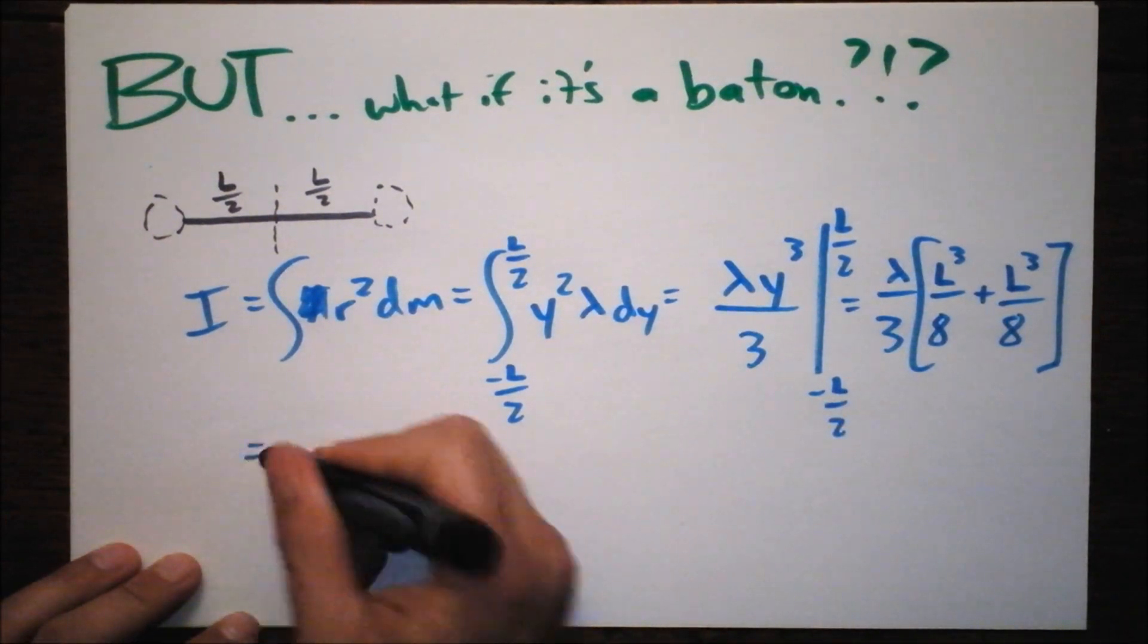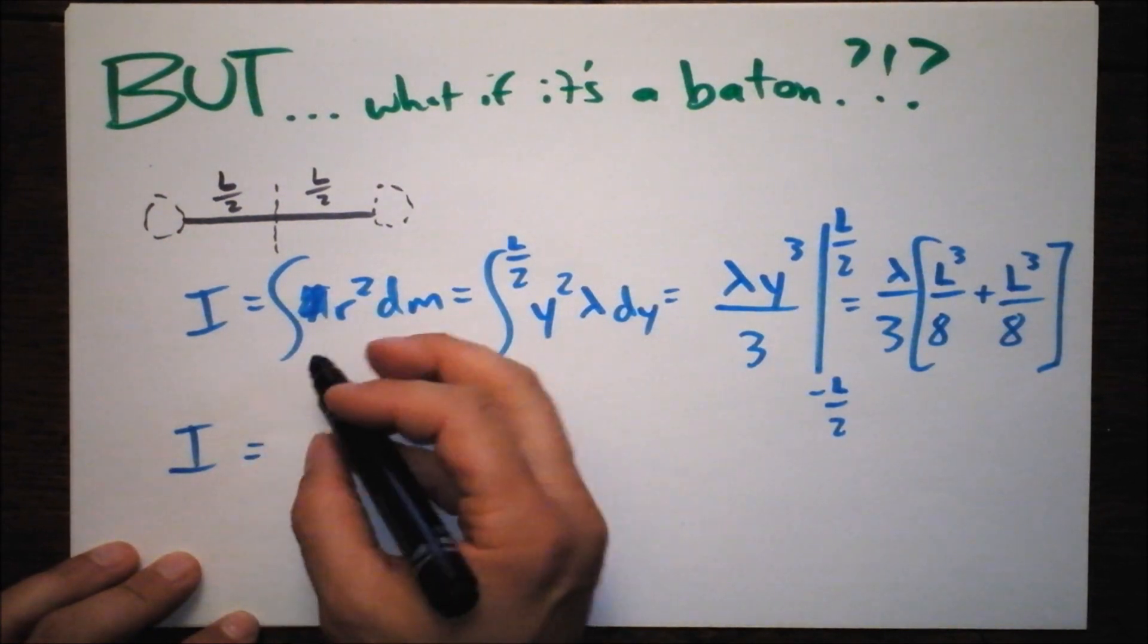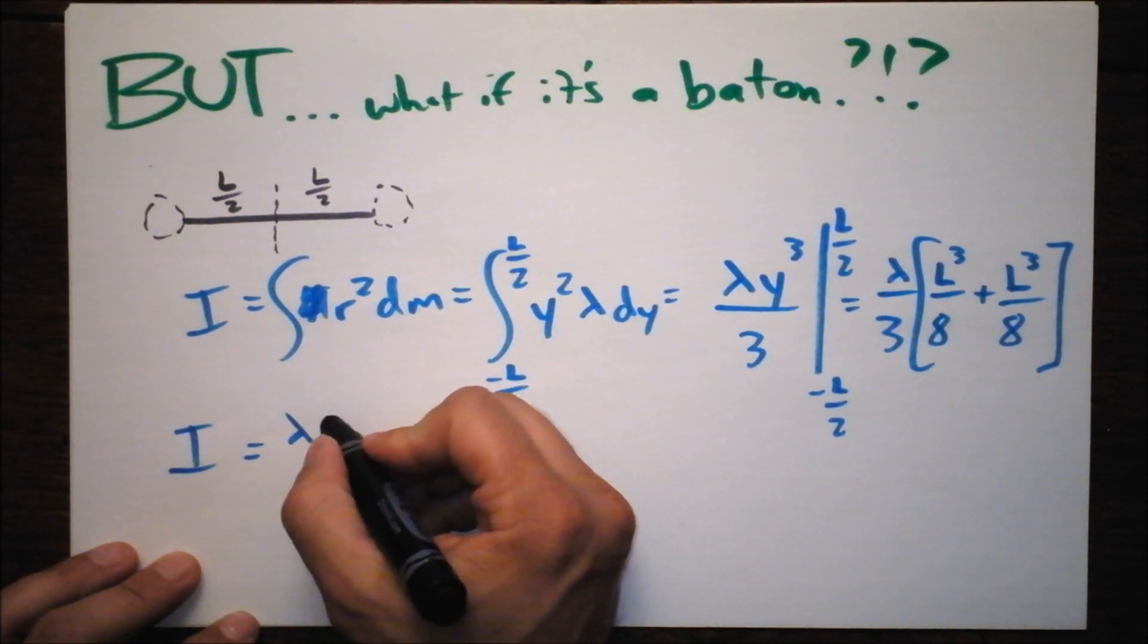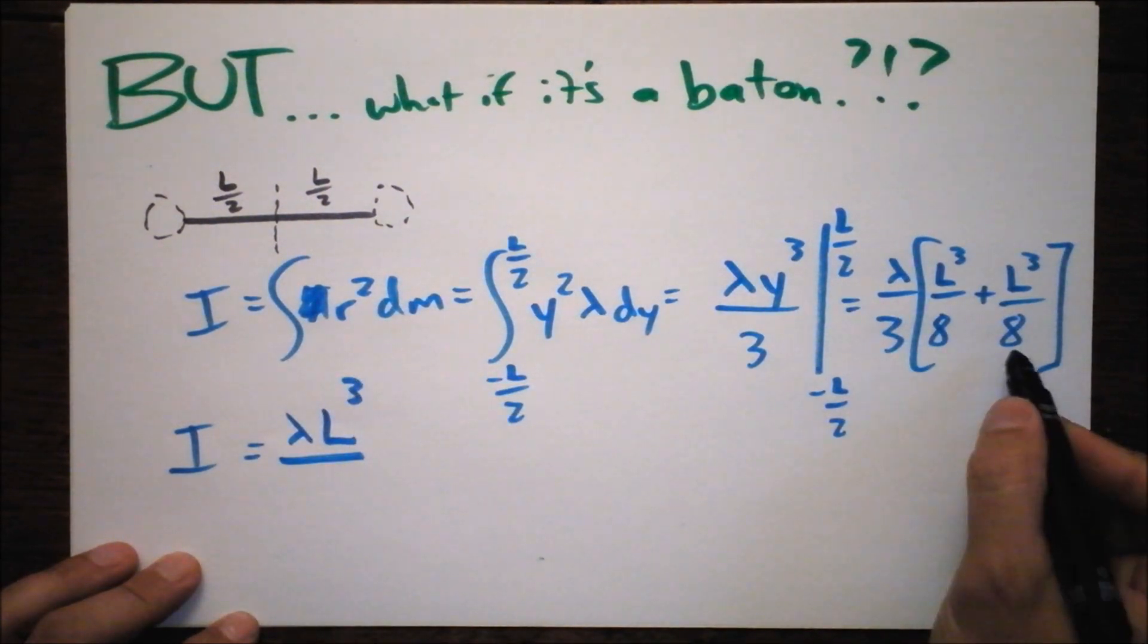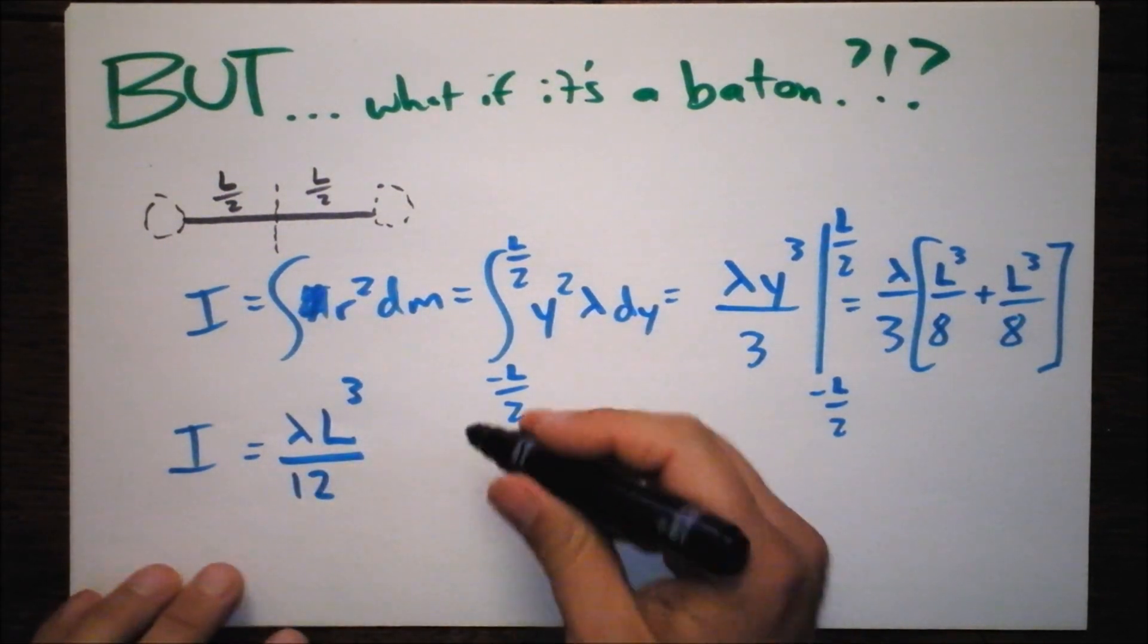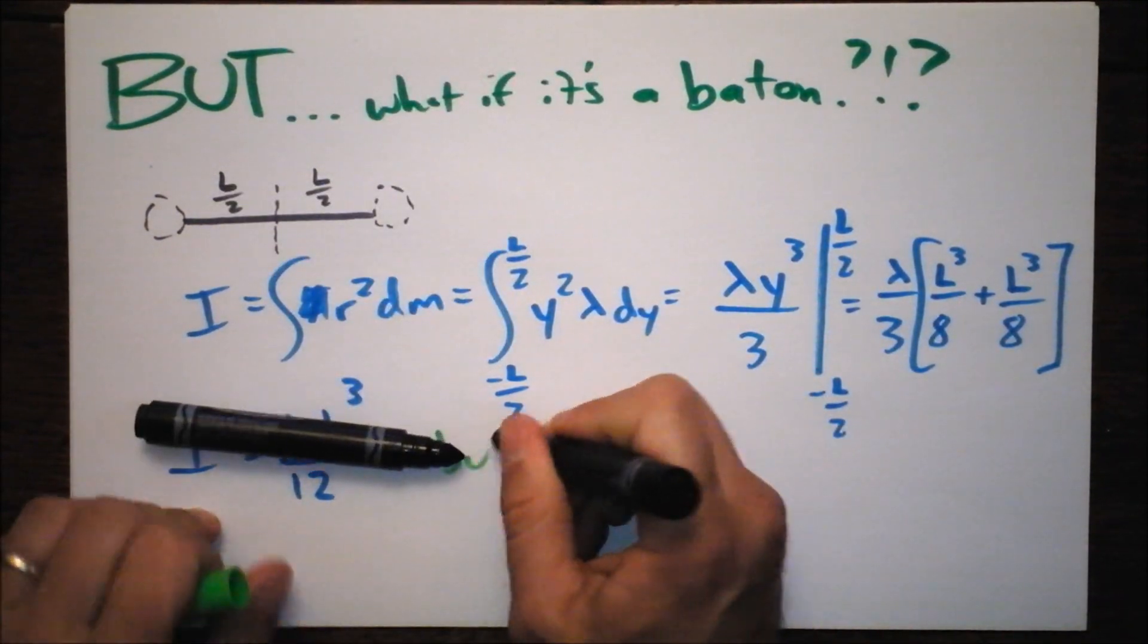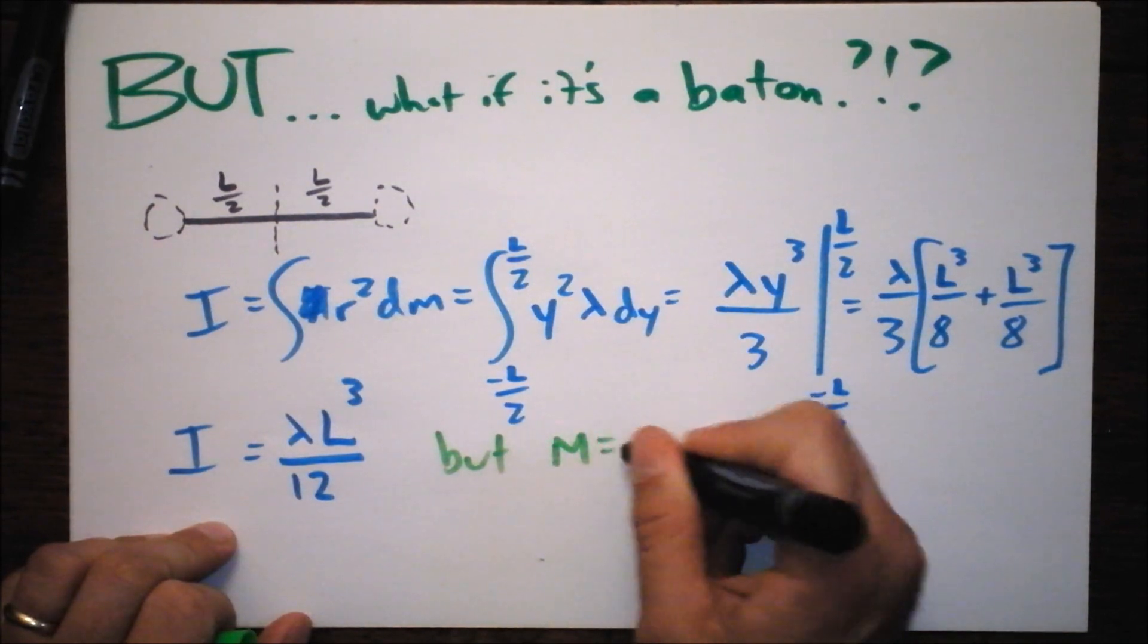So this is going to give us I equals—here I am writing it all out for you. Look at that. What a nice YouTuber. What did we say that was? Four? Yeah. And then there's a 12 here. But then we have to also say that thing. Remember the other thing that we said?